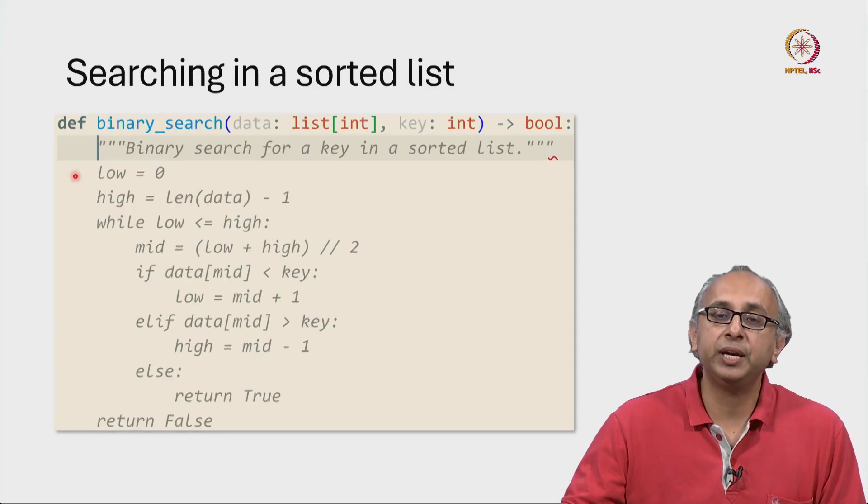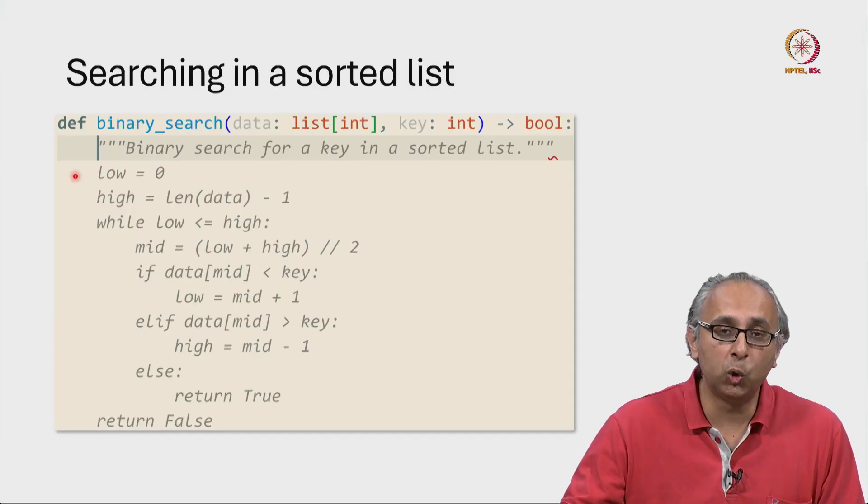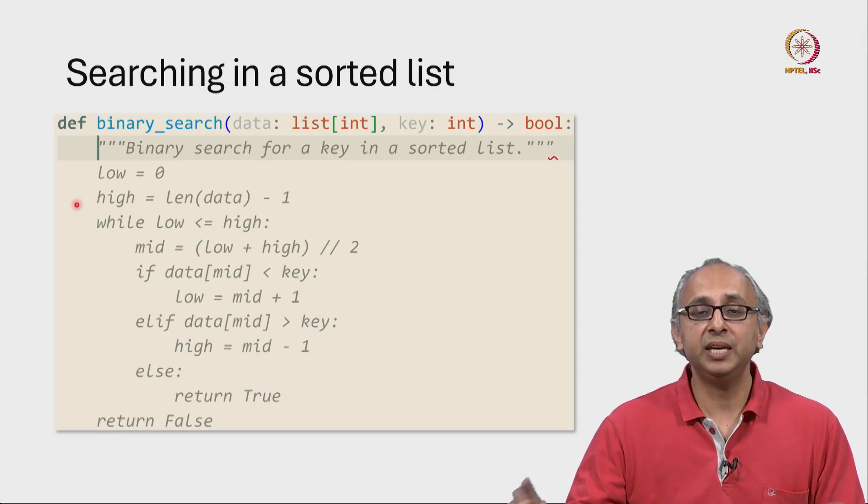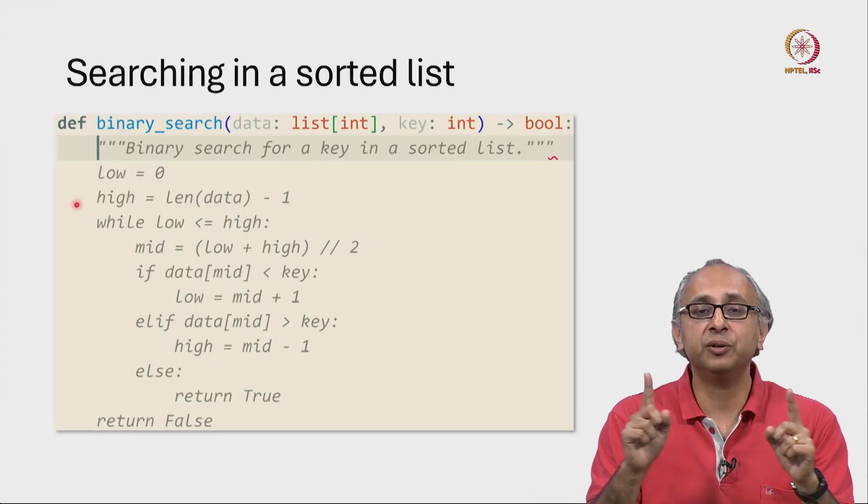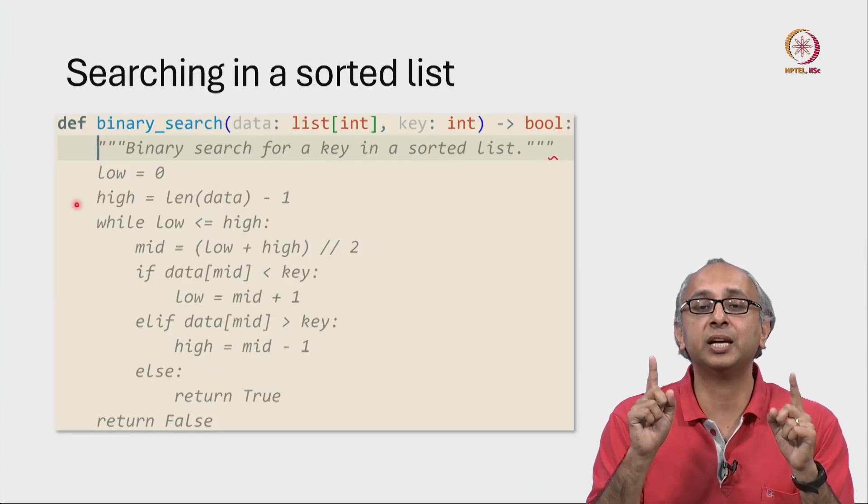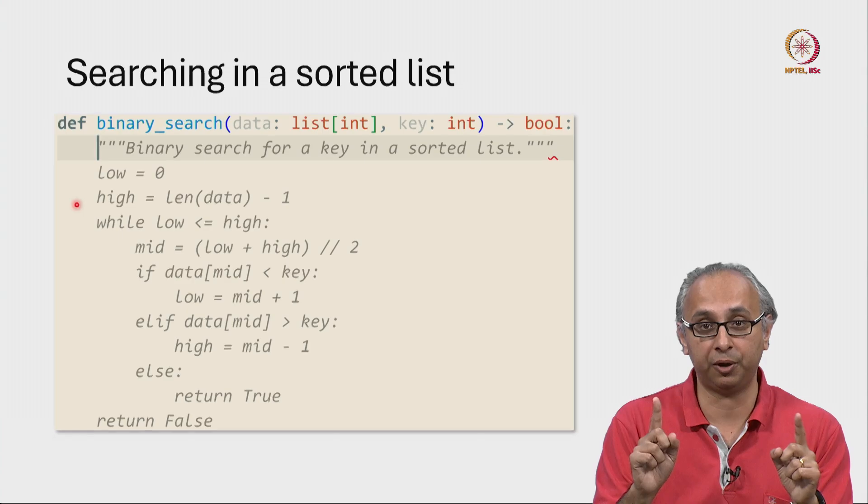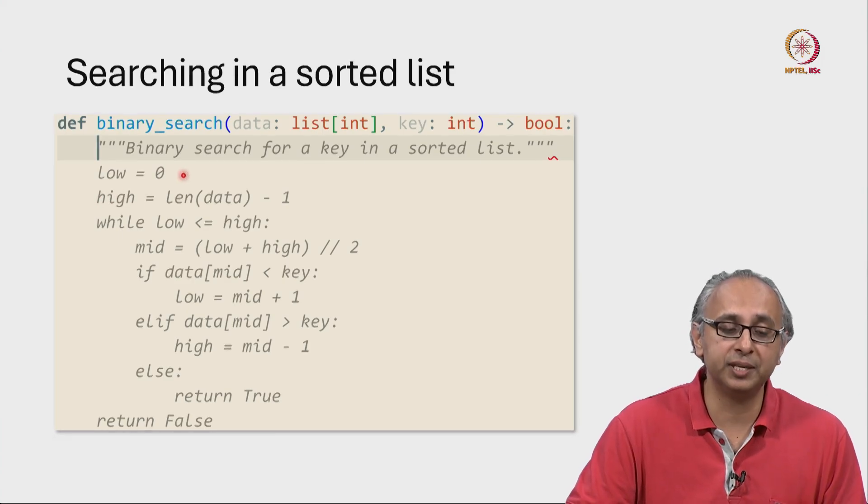First we initialize two variables, low and high. These will indicate the region of the list that we are currently focusing on. And to begin with, low is the smallest possible index 0 and high is the largest possible index, namely length of data minus 1.